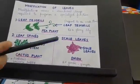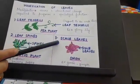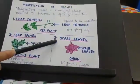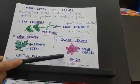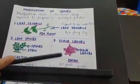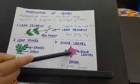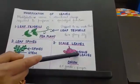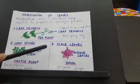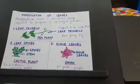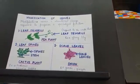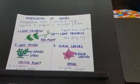Next we have scale leaves. Leaves are also modified as scale leaves. In case of onion, garlic, and ginger, scale leaves protect the bud and also store food and water. Scale leaves are dry in the case of garlic and fleshy in the case of onion.